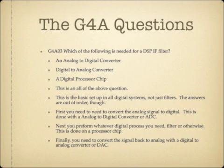Which of the following is needed for a DSP-IF filter? The answers are an analog-to-digital converter, a digital-to-analog converter, and a digital processor chip — and this is an all-of-the-above question on the exam. This is the basic setup for all digital systems. First, you have an analog signal and convert it to digital using an analog-to-digital converter, or ADC. Next, you process the signal with a processor chip. Then you convert it back to analog using a digital-to-analog converter, or DAC. So: ADC to processor to DAC.